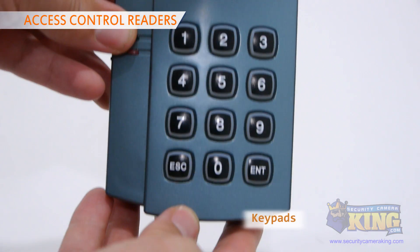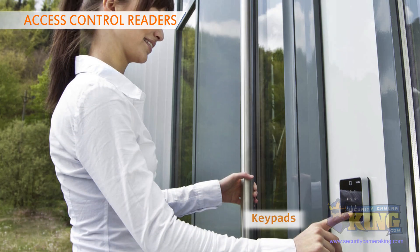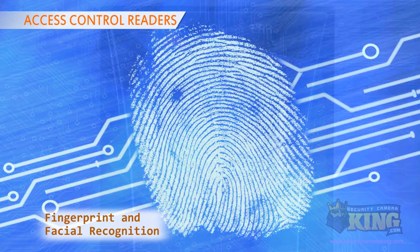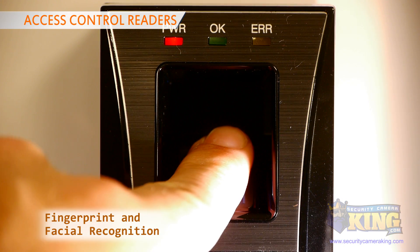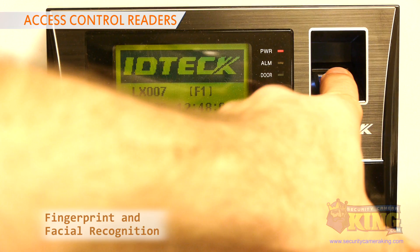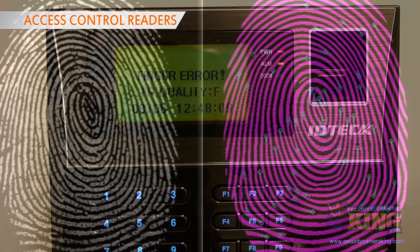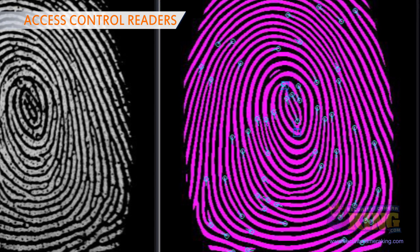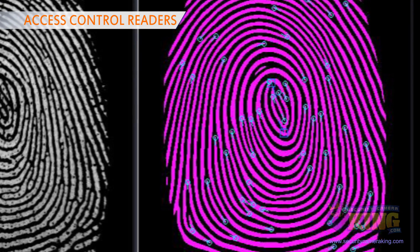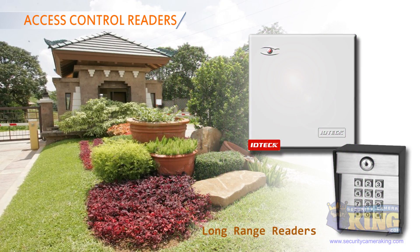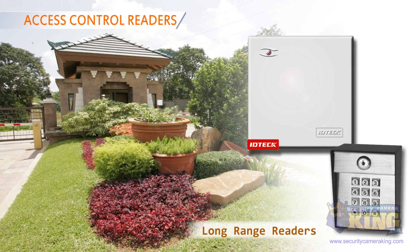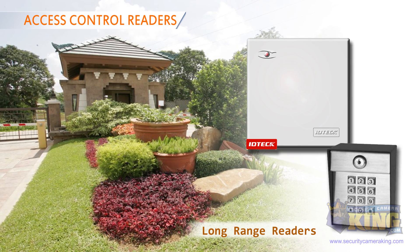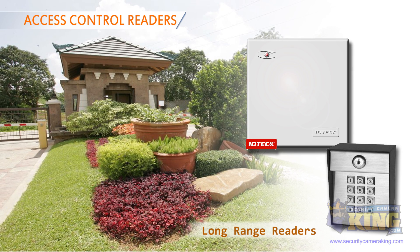Unlike proximity readers, keypads require the user to type an access code directly into the unit. Fingerprint and Facial Recognition Readers, also known as biometric readers, can recognize a user's fingerprint to determine appropriate access for that person. IDTech's patented technology actually maps specific points of the user's finger for greater accuracy and security. Long Range Readers are typically used for outdoor applications, such as vehicle access. They are capable of detecting a long-range access card at much further distances than proximity readers.